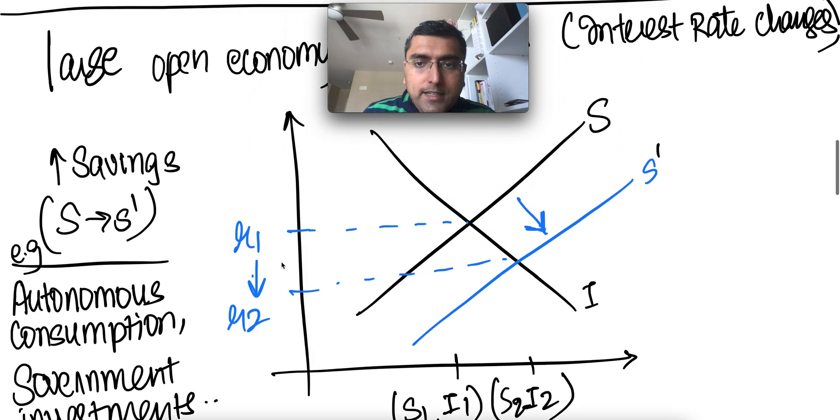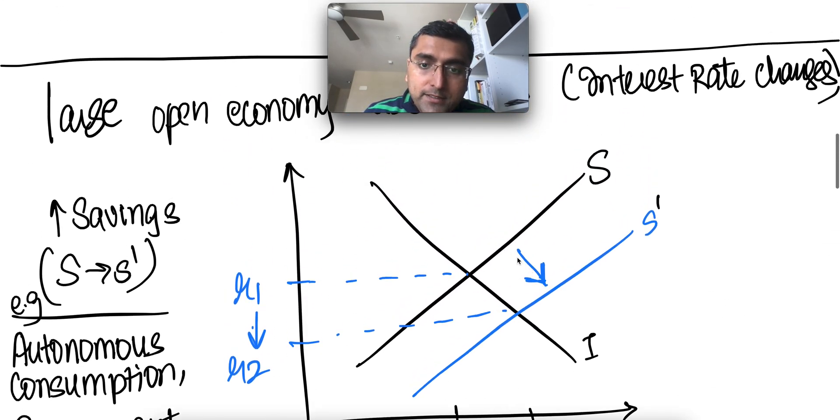And vice versa. If savings go down, interest rate go up, because there's less money available. Same as the concept we saw earlier, more money is available, savings going up, more money is available in the savings account for investment. So you're going to get less return out of it.